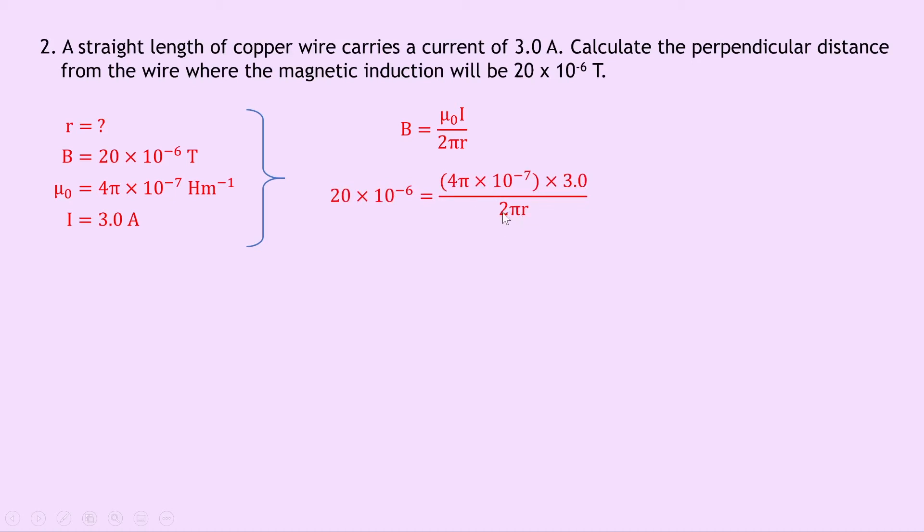And what we can do to get r on its own is cross multiply or take r up to the top on this left hand side and then replace it with this number down the bottom. So we end up with r = (4π × 10⁻⁷) × 3.0 divided by 2π × 20 × 10⁻⁶. And putting this all into your calculator should give you a final answer of 0.03 metres.